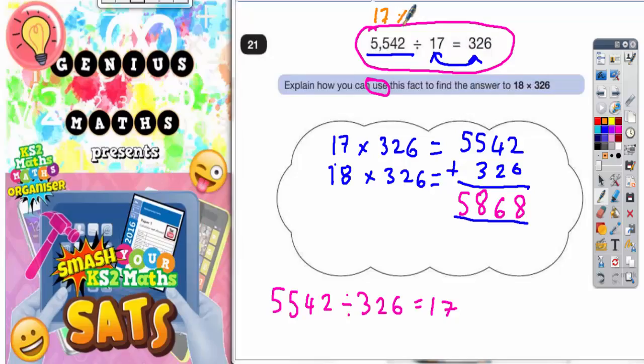So, 17 times 326 is equal to 5,542. So, 18 lots of 326, you just need to add on an extra 326 onto 5,542, which gives you a final answer of 5,868.